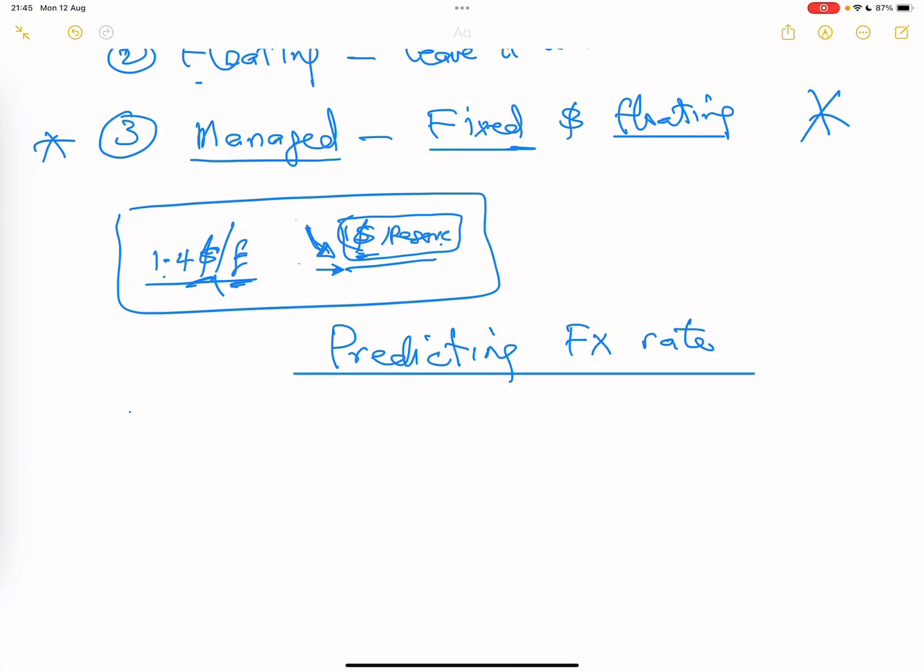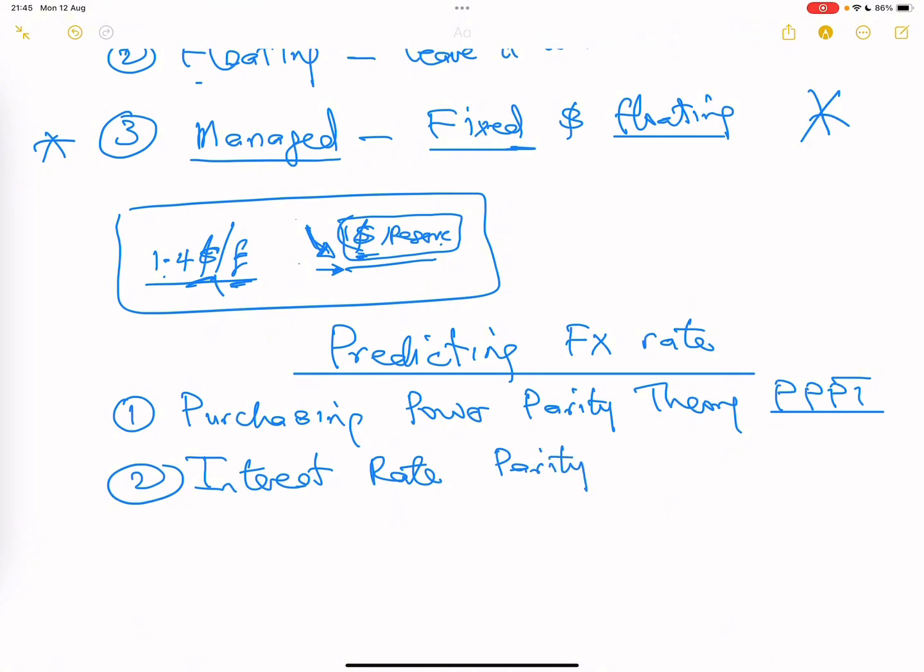There are three methods we'll be looking at. We'll look at what we'll call the Purchasing Power Parity Theory, PPPT. Then we have the Interest Rate Parity Theory, IRPT.